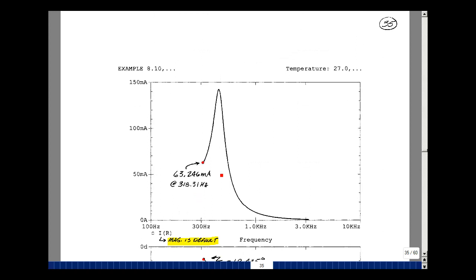Take a look at the current in the resistor. And so I'll ask for that magnitude. Here's my first data point. It's 63.246 milliamps. And we had hand calculated 63.25, so virtually identical.